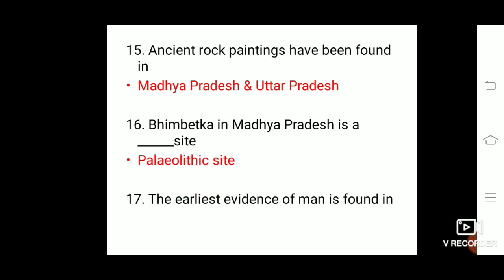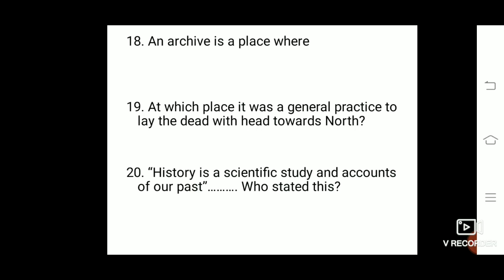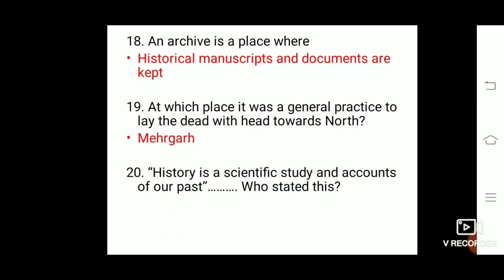The earliest evidence of man is found in the Narmada Valley. An archive is a place where historical manuscripts and documents are kept. At Mehrgarh, it was a general practice to lay the dead with the head towards the north. History is a scientific study and accounts of our past — this was stated by Professor Ghatay.